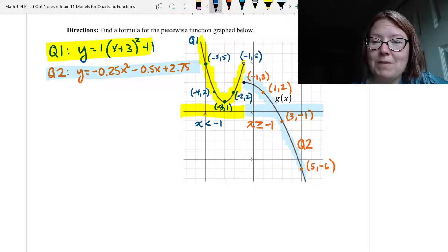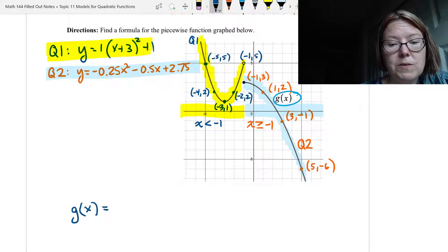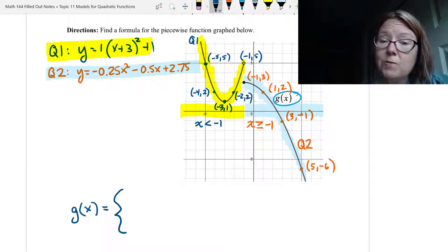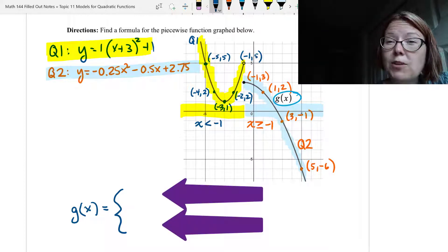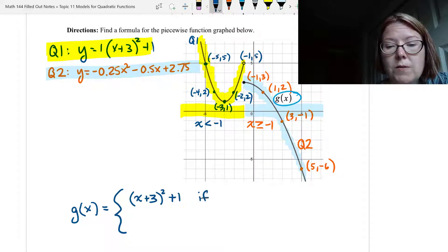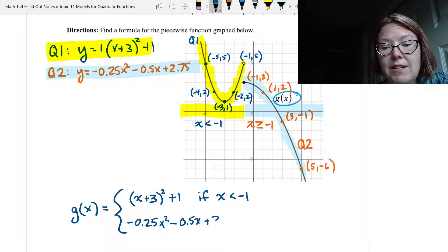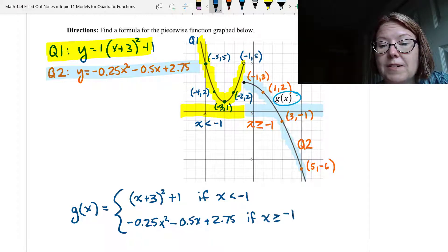Let's now write the final formula for this piecewise function, and the actual function was g(x). g(x) equals left curly brace with enough room for two lines. The top line, remember we don't write the y equals anymore because we have g(x) equals in front. That means we have (x + 3)² plus 1, we use that if x is less than -1. For the second line, -0.25x² - 0.5x + 2.75, and we use that if x is greater than or equal to -1.